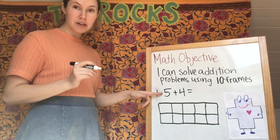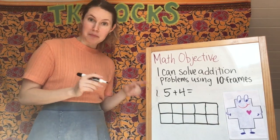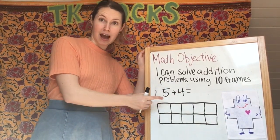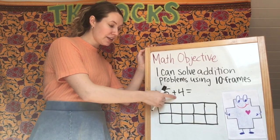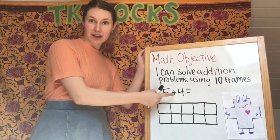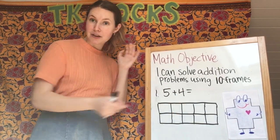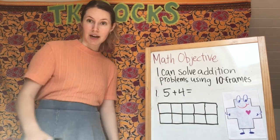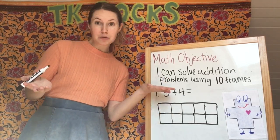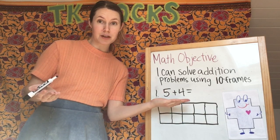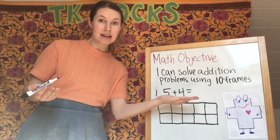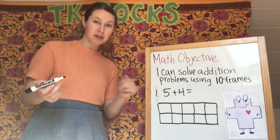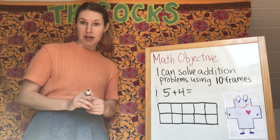Today you're going to be seeing problems just like this, where it's showing you the numbers that you're going to be adding, it's showing you that you need to add them up with Gus the Plus, and it's asking you what does it equal with the equal sign. Now this is not a story problem — it's just giving you the numbers to add and the equal sign to figure out how to solve it. And we're going to be doing that using our ten frames.